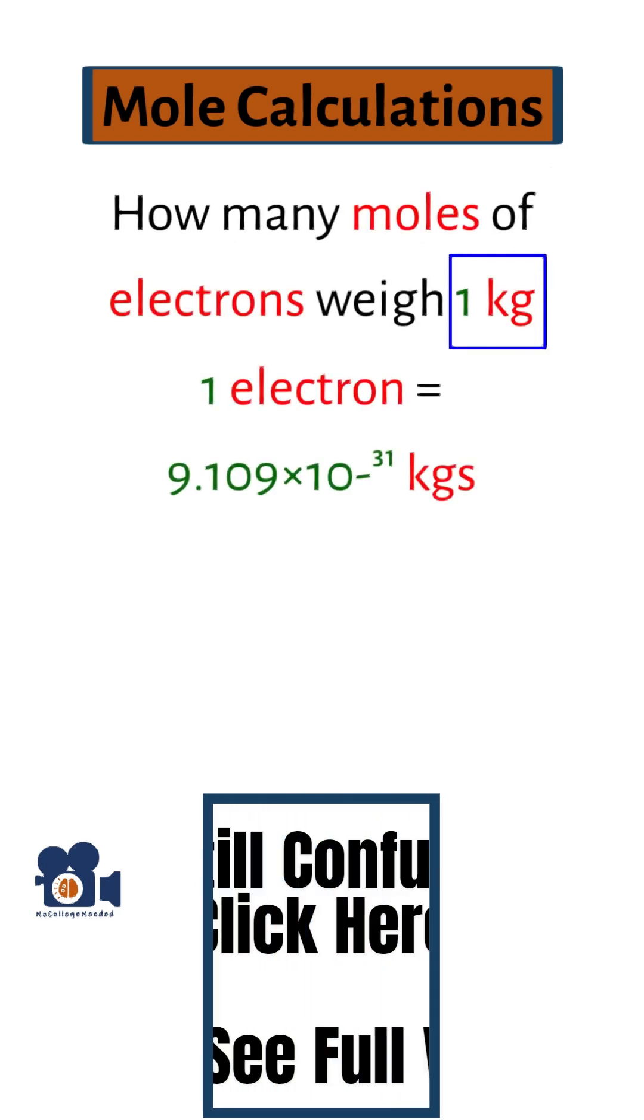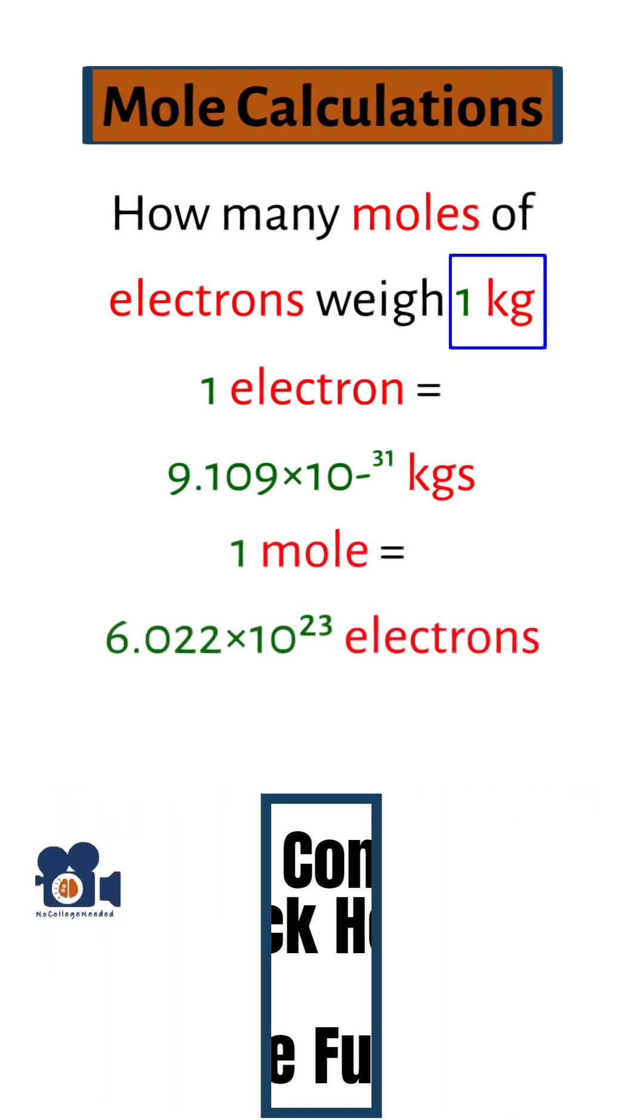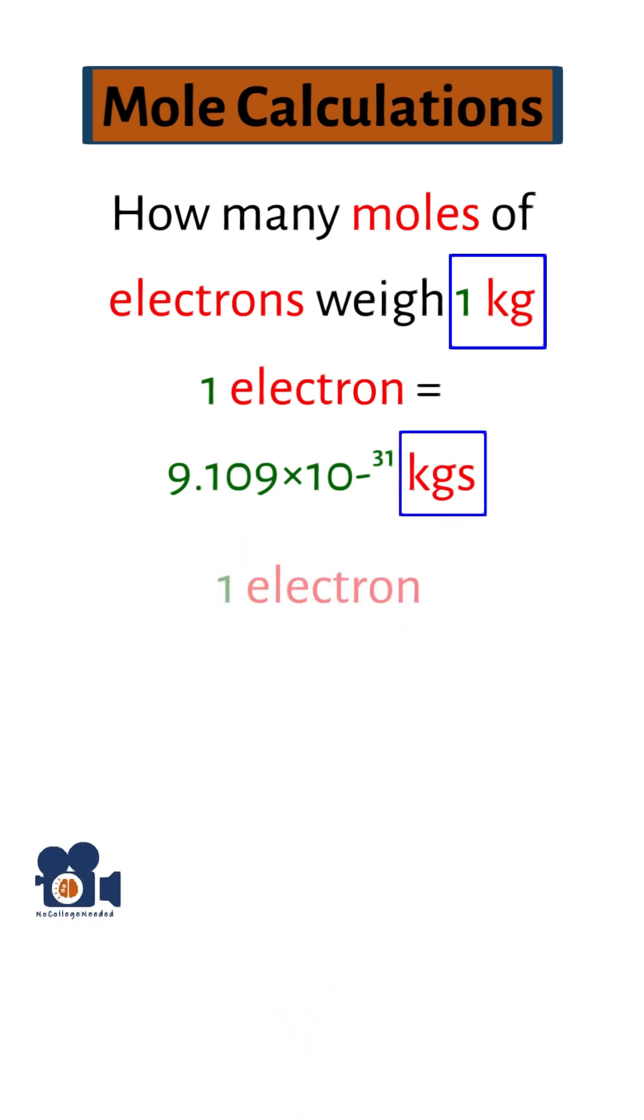Next, look to see what equation also has that unit in it. We see that 1 electron has the unit kilogram. We can write this as either 1 electron per 9 grams or 9.1 kilograms per 1 electron.